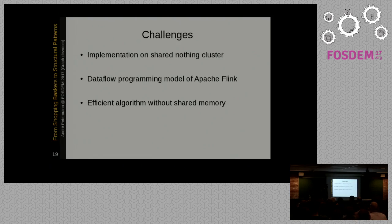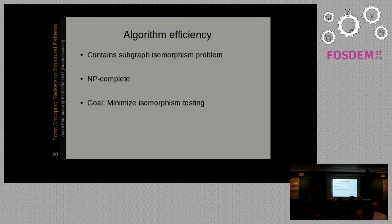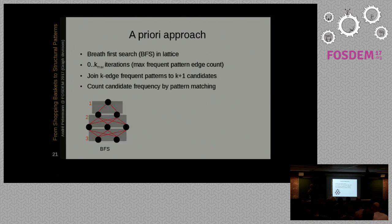The challenges in implementing such algorithms, especially in the context of shared nothing clusters, is that we need to meet the dataflow programming model. In this case of Apache Flink. But this also applies to Apache Spark or actually even MapReduce. And what we need to find is an efficient algorithm which does not rely on shared memory. I don't want to become too scientific now. So I just explain your algorithm efficiency. The problem of these algorithms is they contain the so-called subgraph isomorphism problem which is NP complete. We need to enumerate all isomorphisms between graphs actually, which is very expensive. And we cannot avoid this completely if we want to have the complete set of frequent subgraphs. But what efficient algorithms can do, they minimize the isomorphism testing effort.